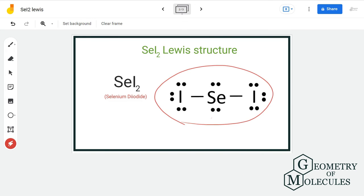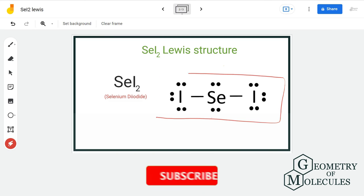Thus every atom in this structure has complete outer shell and zero formal charge. So this is the final Lewis structure of SeI2.